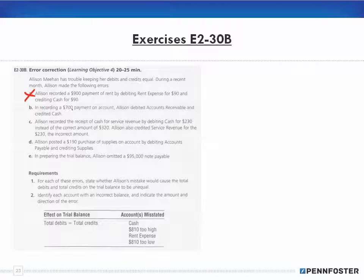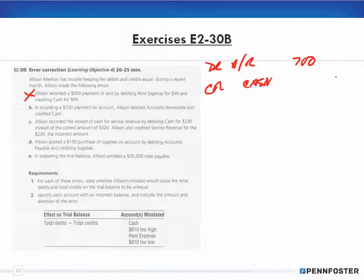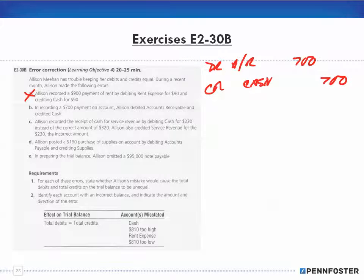For error B, in recording a $700 payment on account, Allison debited accounts receivable and credited cash for $700. Debits equal credits — even if the entry is wrong, as long as debits equal credits those technical rules are followed. So debits equal credits, but the accounts are misstated.